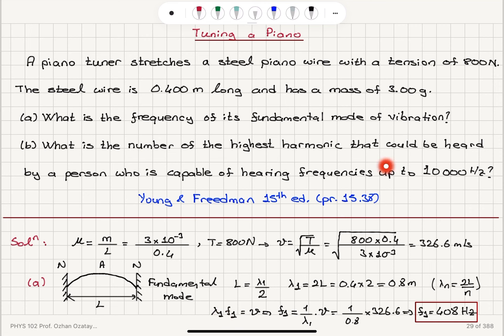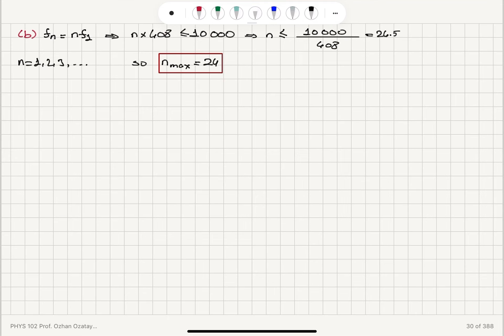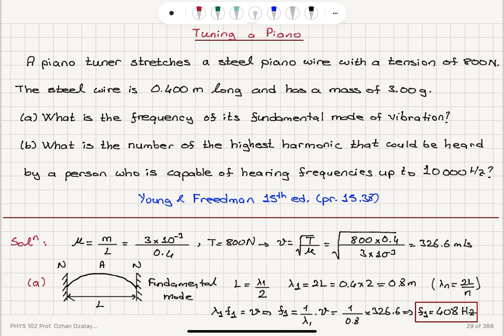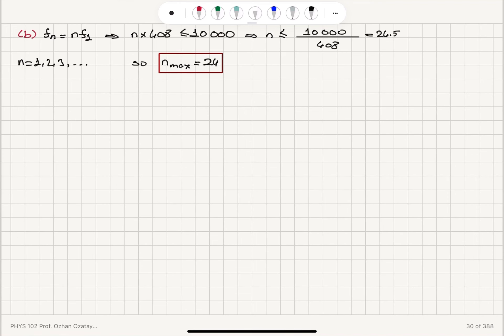What is the number of the highest harmonic that could be heard? The maximum frequency we can hear is 10 kilohertz. Since we have the wavelengths given by 2L divided by N, the frequency is given by N times F1, where N is an integer in this case.